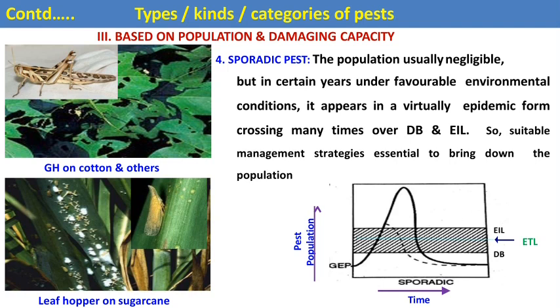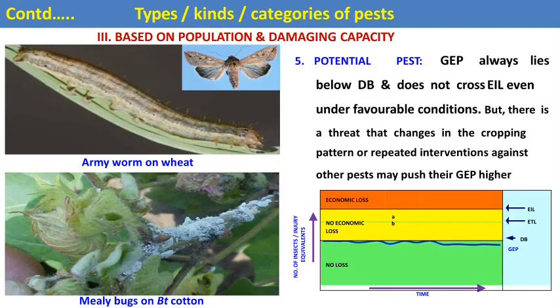The fourth type based on population and damage capacity is the sporadic pest. The population is usually negligible — also called a negligible pest — but in certain years under favorable environmental conditions, it appears in a virtually epidemic form, crossing many times over the damage boundary and economic injury level, so a suitable management strategy is essential. Examples are the locust and leafhopper on sugarcane. The potential pest always has its GEP below the damage boundary and does not cross the EIL even under favorable conditions. However, changes in cropping pattern or repeated intervention against other pests may push their GEP higher. Examples are armyworm on wheat and mealybug on Bt cotton.